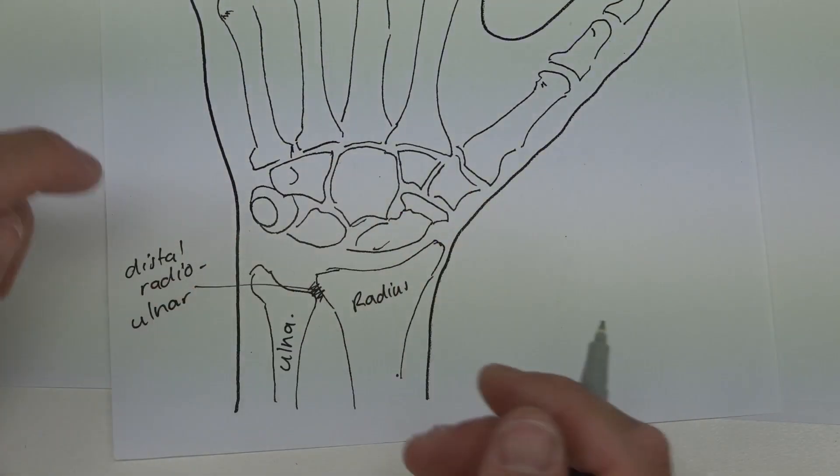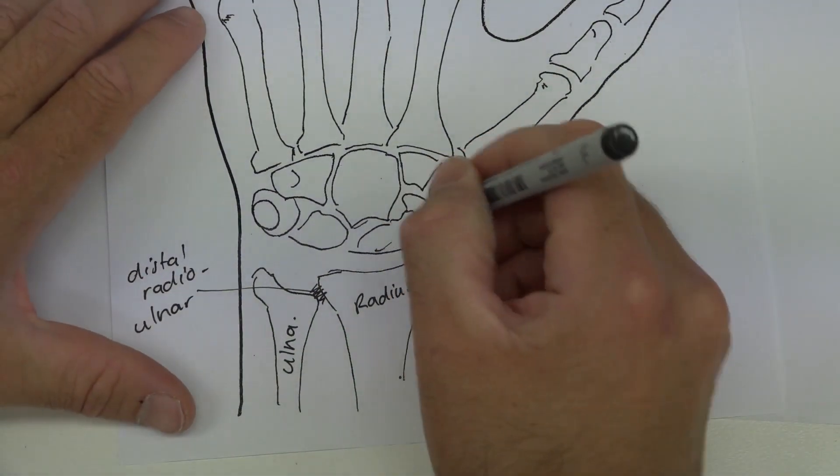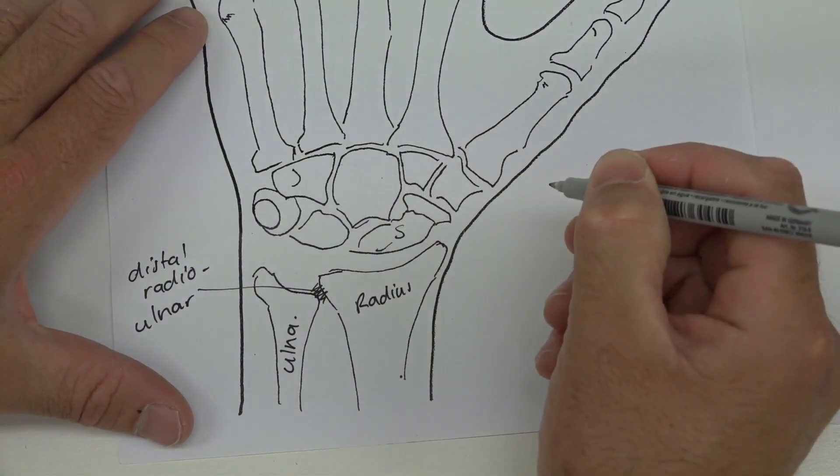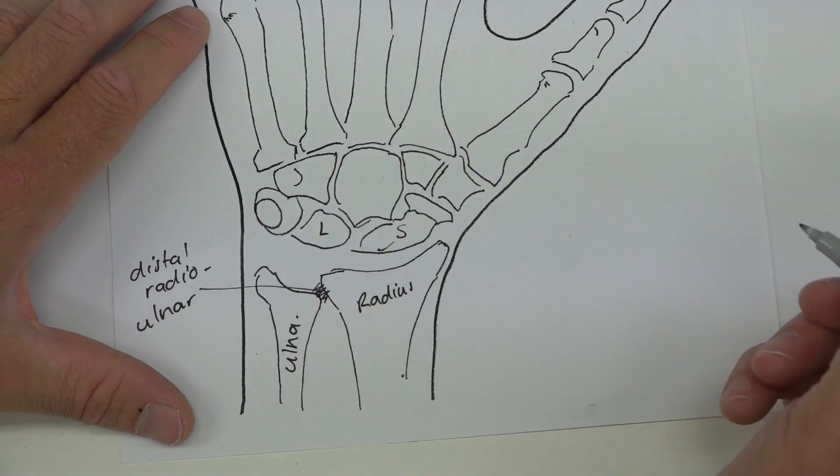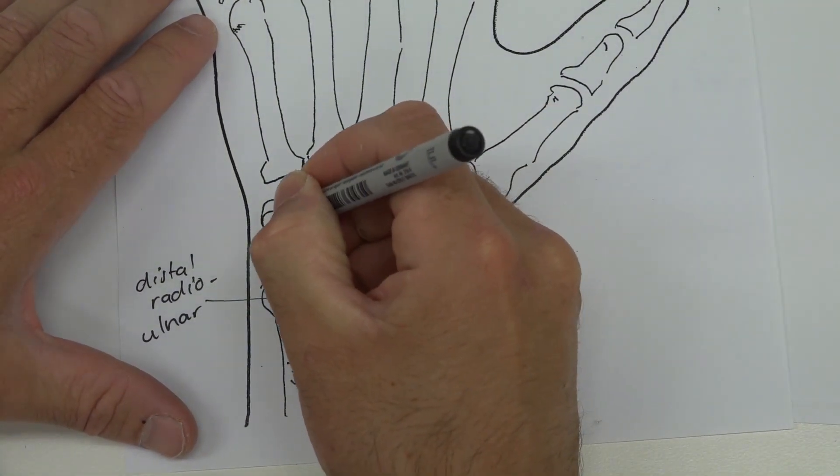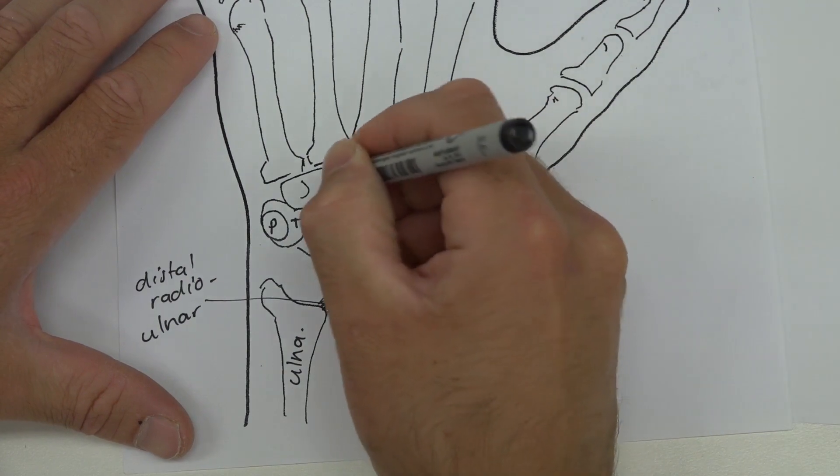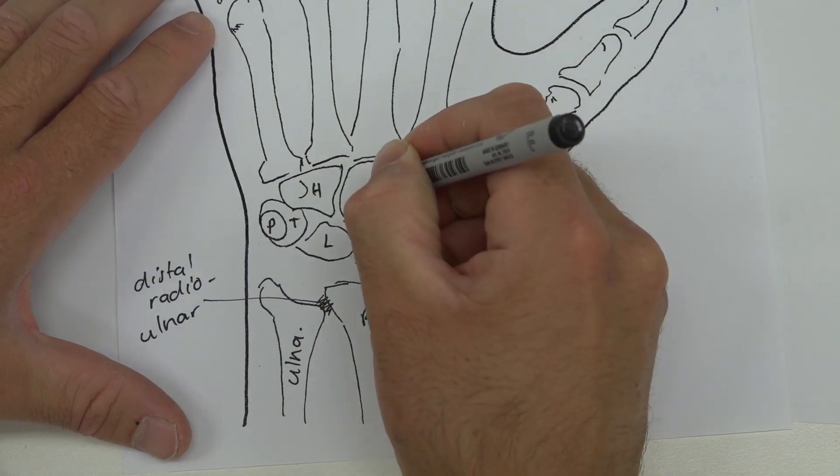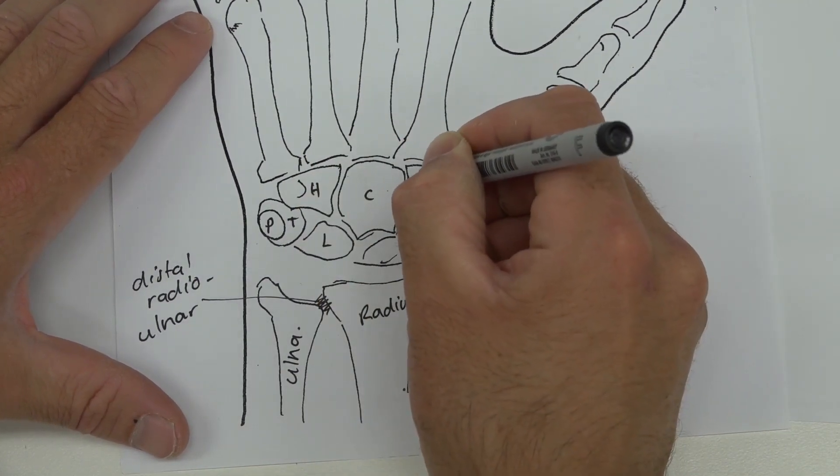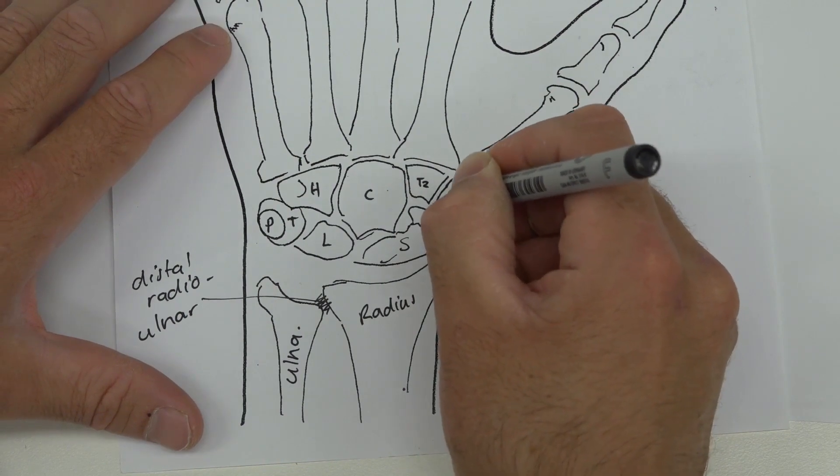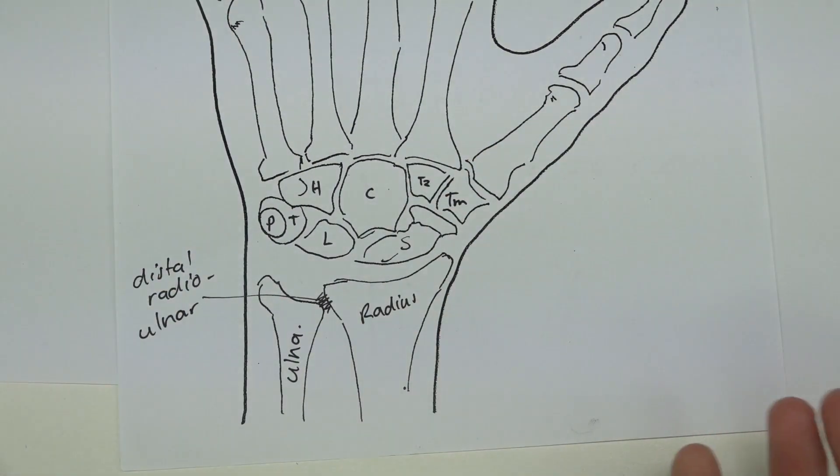This one here is the scaphoid, then we have the lunate, triquetrum, pisiform, hamate, capitate, trapezoid, and trapezium. Always remember that the trapezium is under the thumb.